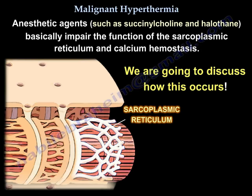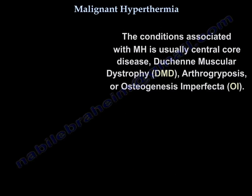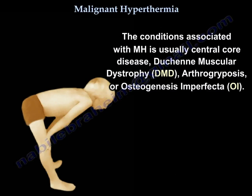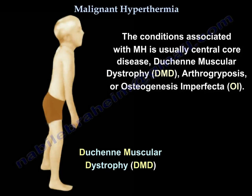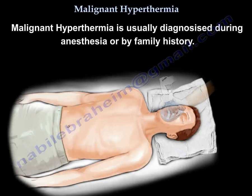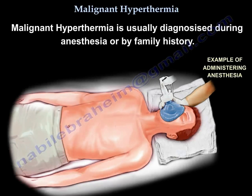The conditions associated with malignant hyperthermia are usually central core disease, Duchenne muscular dystrophy, arthrogryposis, and possibly osteogenesis imperfecta. It is usually diagnosed during anesthesia or by family history.